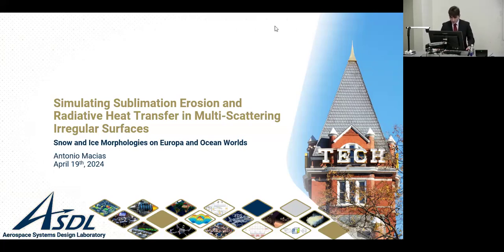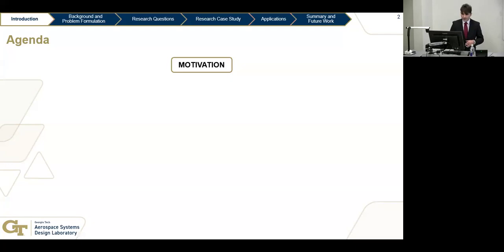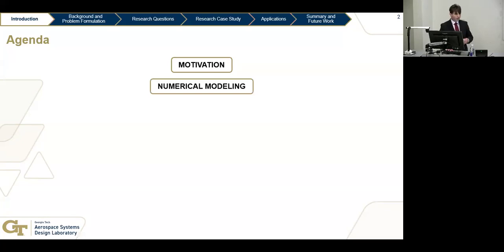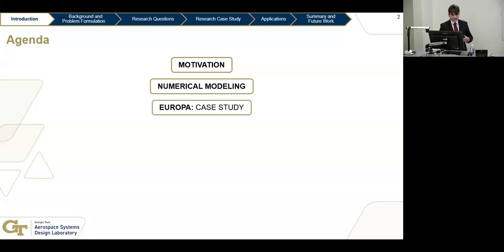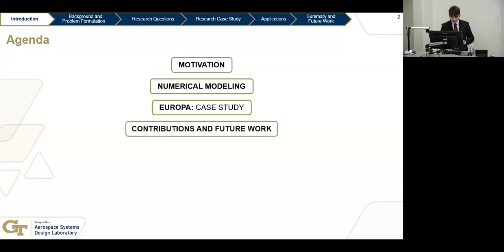My name is Antonio Macias, and today we will explore the surface of Europa and other similar airless bodies in the outer solar system, studying the surface evolution over the past millions and millions of years. Today's agenda: I'll first provide motivation about the problem, introduce features called penitentes which might be present on Europa, then go into a numerical model developed over the past five or six years. I'll use Europa as the case study, though the methodology is also valid for comets and other bodies with ice surfaces.